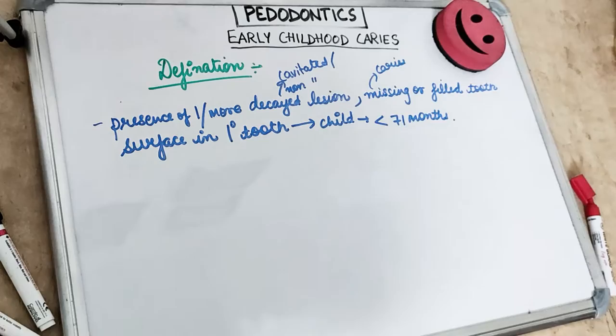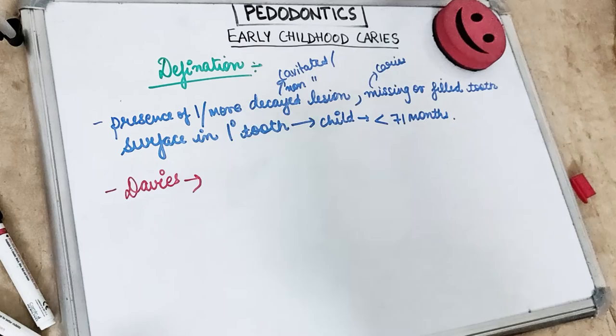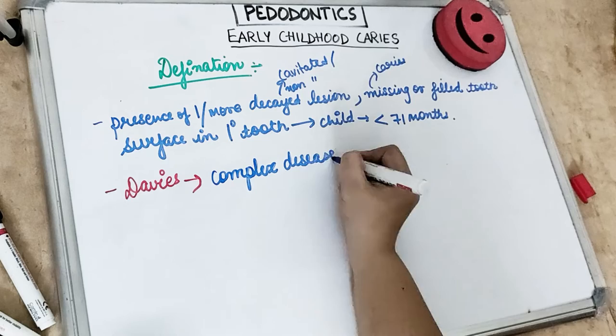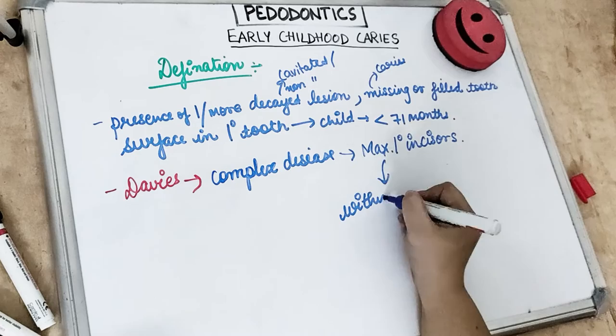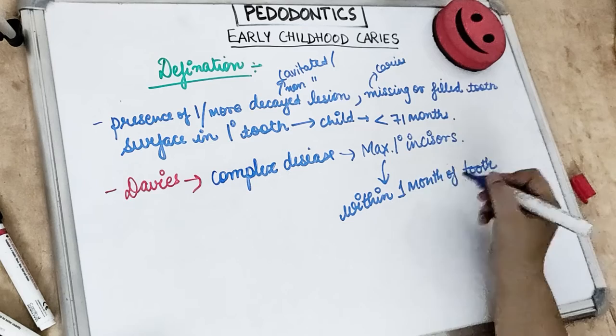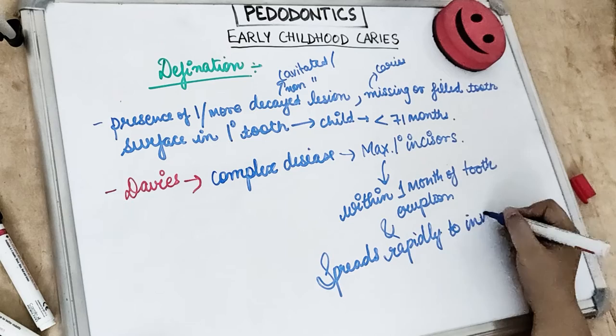This applies in a child who is younger than 71 months of age. According to Davies in 1998, early childhood caries is a complex disease which involves the maxillary primary incisors within a month after their eruption. These caries spread rapidly and can involve one or more other primary teeth.